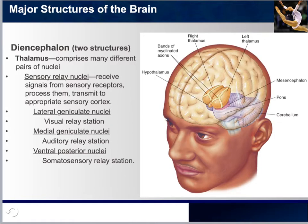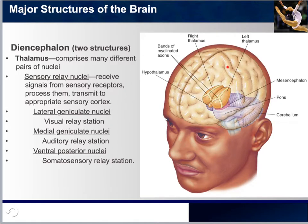Think of the thalamus as a relay station — like a mail room. Where I work, there are hundreds of employees, and it's the mail room's job to sort mail to each specific mailbox; otherwise there would be chaos. The thalamus does exactly that — it sorts sensory input whether visual, auditory, or somatosensory — and sends it to the corresponding area of the cerebral cortex. Note that the olfactory sense does not go through the thalamus; it has its own relay station.